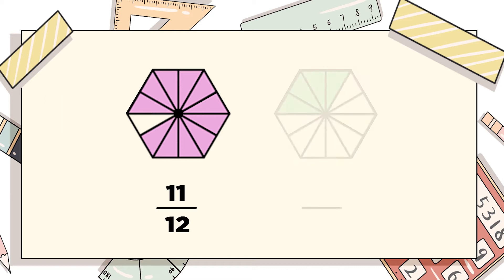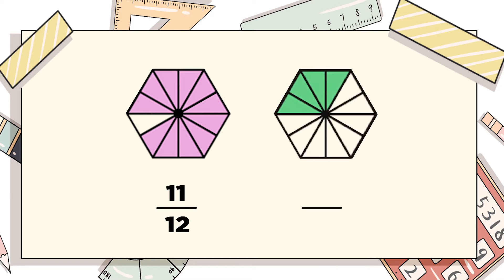In another example, you can see the same picture but with different colored portions. The colored parts in this picture are 4. Hence our numerator will be 4 and the total parts remain the same, so the denominator is 12.